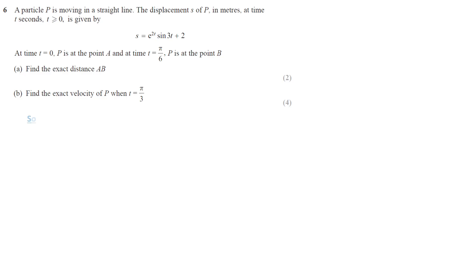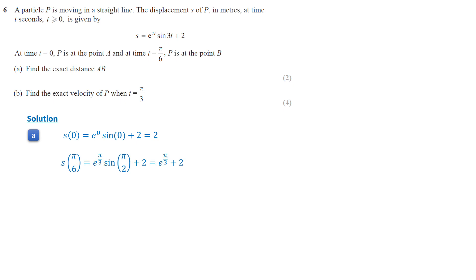To find the distance between points A and B, we start by calculating the distance when t equals 0. Since sine 0 is 0, the distance at t equals 0 is simply 2. Next, we find the distance when t equals pi over 6. We know that sine(pi/2) is 1, so the distance is e to the pi over 3 plus 2. The difference is e to the pi over 3, which represents the distance between points A and B.